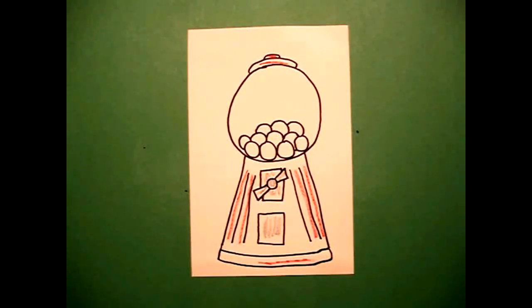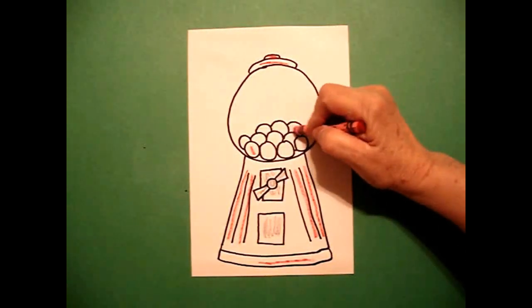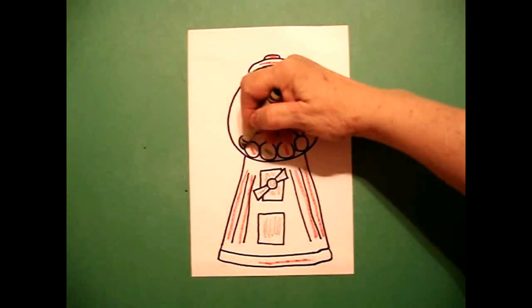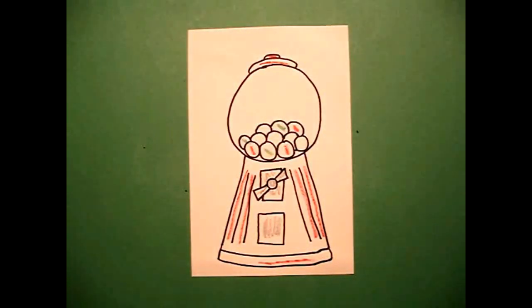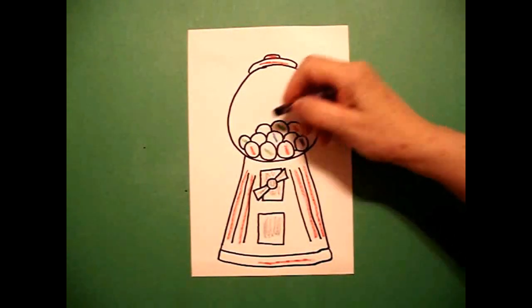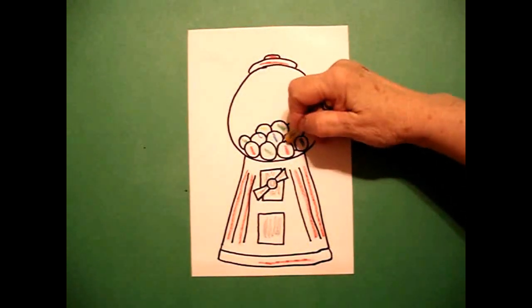And now I'm ready to color my gumballs. So what I like to do is I like to space out. So I'll do a couple of reds, come in and do some greens. I'm using the primary colors, come in and do some blues, and finally some yellows. Keep it colorful.